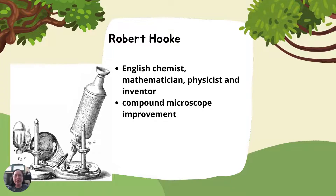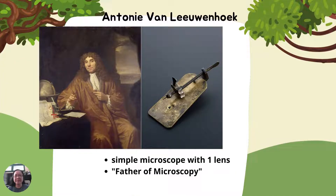Robert Hooke, an English chemist, mathematician, physicist, and inventor, also developed a compound microscope. In 1675, a man by the name of Anton van Leeuwenhoek studied the works of Robert Hooke and improved upon them.